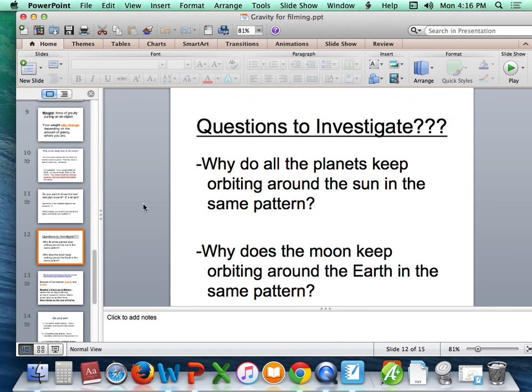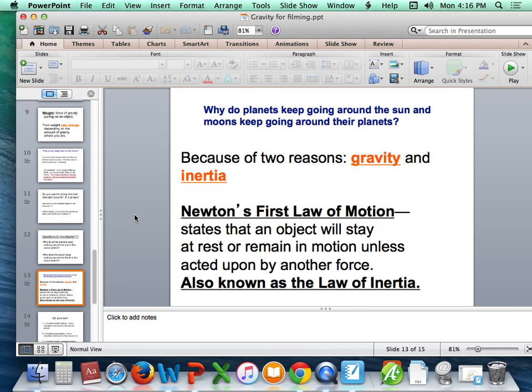Here's some more questions to investigate or consider. We've been talking about how the planets keep going around the Sun and how the Moon keeps going around the Earth. But why does this keep happening? Well, the reason why the planets go around the Sun and the Moon goes around the Earth is gravity and something called inertia.